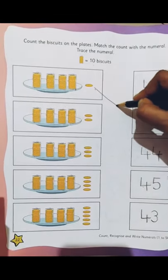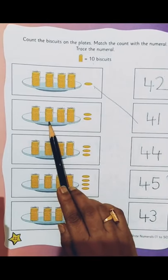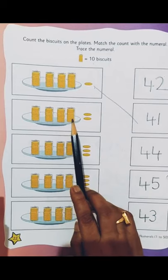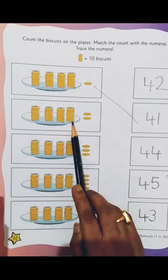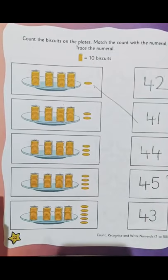So we match it. Now we have the next one 10, 20, 30, 40. So again we have 40 biscuits and 1 and 1, 2 biscuits. So how much will it be? 42.